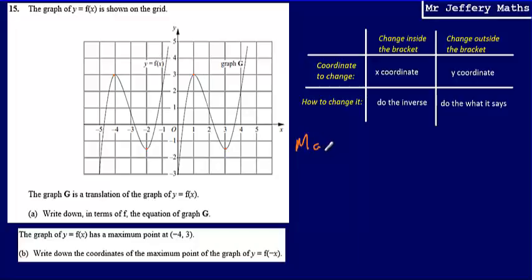So the maximum point on y equals f(x), the first one is (-4, 3). And that is being translated to having a coordinate of (1, 3).